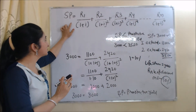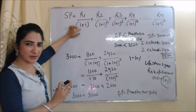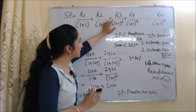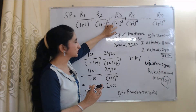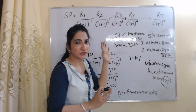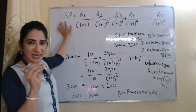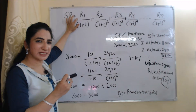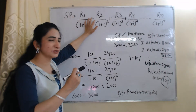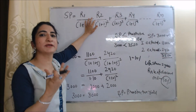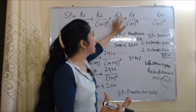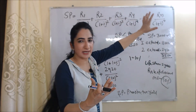Our formula is: SP = R1/(1+i) + R2/(1+i)² + R3/(1+i)³ + R4/(1+i)⁴ ... till Rn. Here SP is our supply price, R1 is expected income in the first year, R2 is expected income in the second year, R3 in the third year, R4 in the fourth year, and so on till Rn.